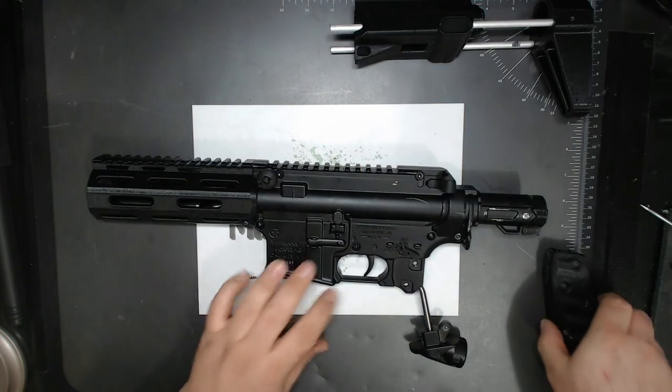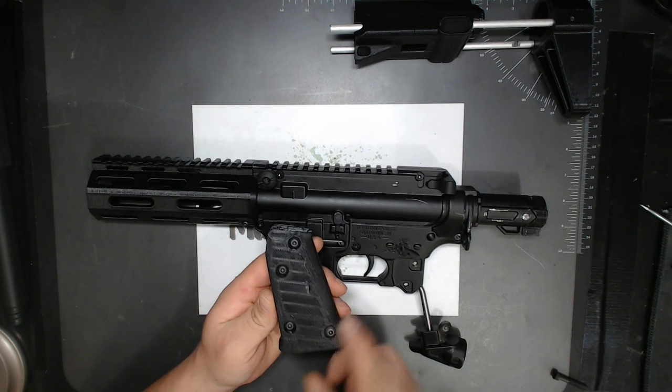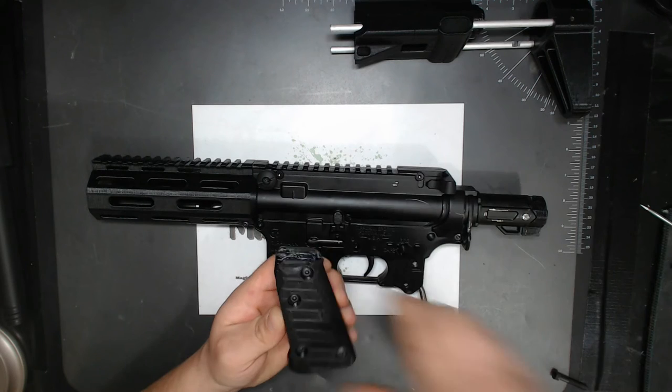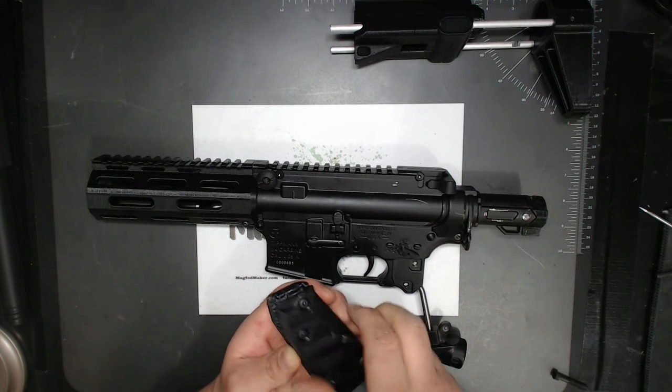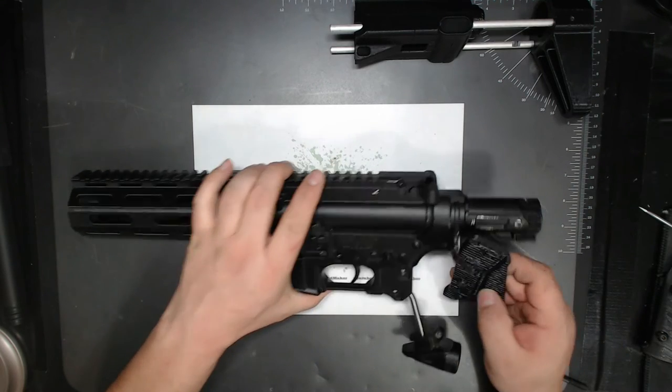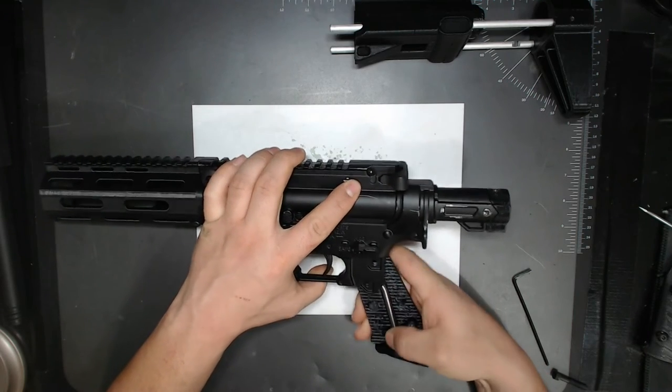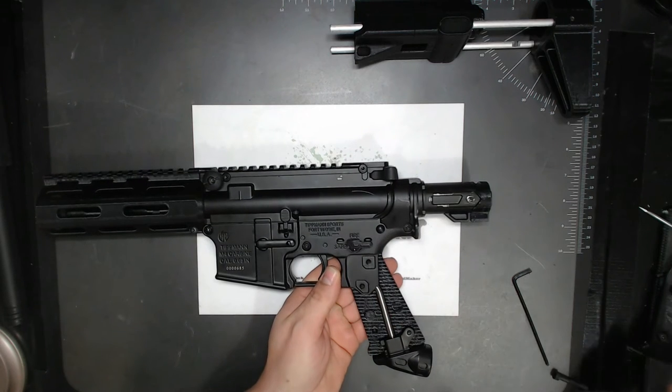Next we'll do the pistol grip. Loosen all of these metric bolts first. As I did not do. Put the back piece on, making sure that the nuts in the back fall out. Line that up.